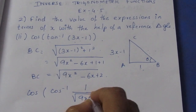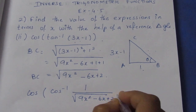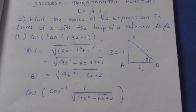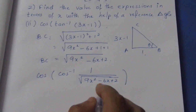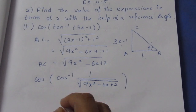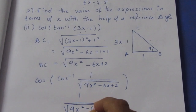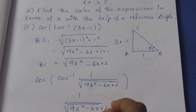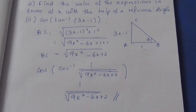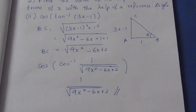So the hypotenuse is √(9x² - 6x + 2). We now cancel the cos inverse and the final answer is 1/√(9x² - 6x + 2). That is the solution. Thank you.